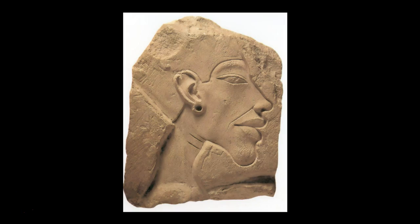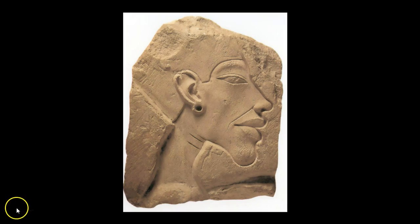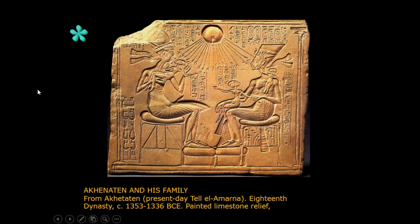Here is a relief carving of Akhenaten. You can see the long neck and the protruding chin, the really full lips. He's pretty recognizable — his image in this style is very distinct. Akhenaten was a very unique ruler in Egyptian history. This is a relief carving known as Akhenaten and his Family, and it does show some of Akhenaten's beliefs and how Egyptian art changed in response to them.